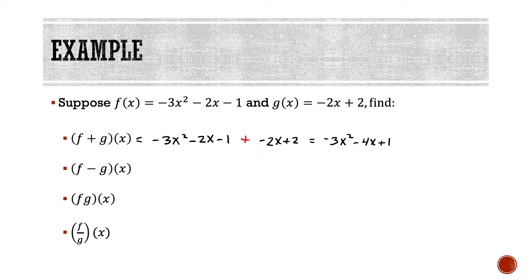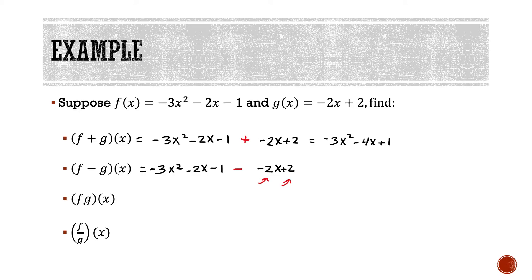Now we're going to do the same basic idea for subtraction — finding f minus g of x. We write down function f, then function g, with a subtraction sign in between. We have to be careful here because that subtraction needs to be distributed among both terms in the second function, not just the first term. So to remind myself to distribute that negative, I'm going to put the second function in a set of parentheses.